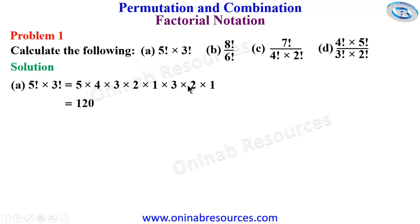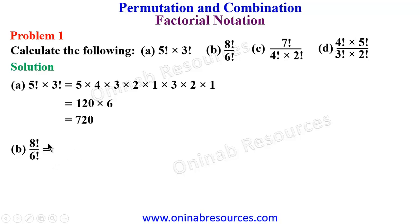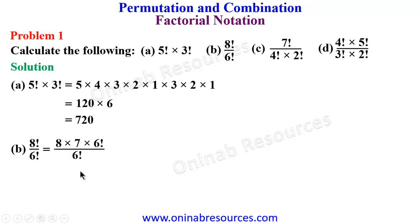The first part, 5 factorial, equals 120, then times 6 which gives 720. For part b, 8 factorial divided by 6 factorial: we expand it in short form as 8 times 7 times 6 factorial over 6 factorial.